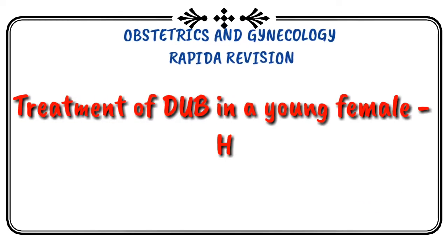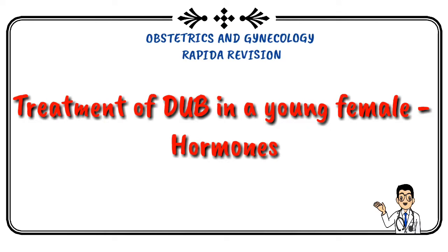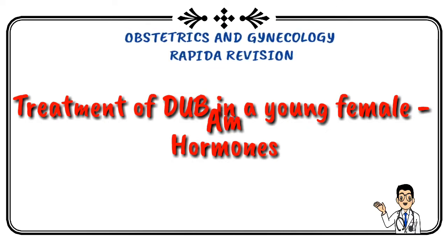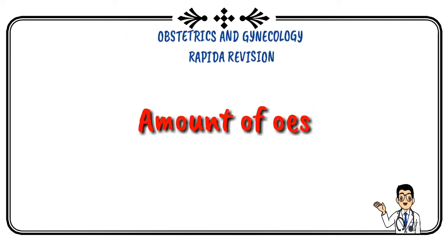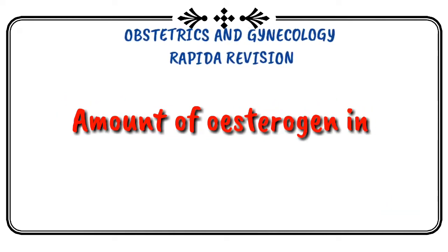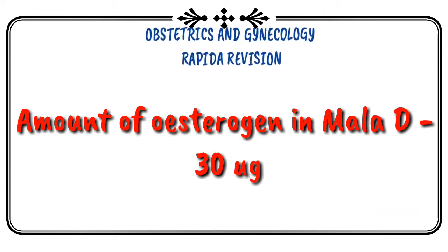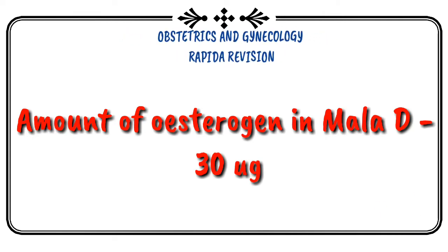Treatment for dysfunctional uterine bleeding in a young female is hormones. Amount of estrogen for minipill is 30 micrograms.